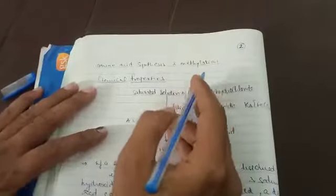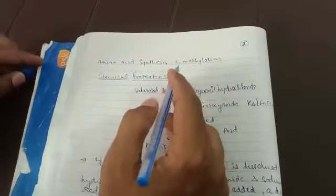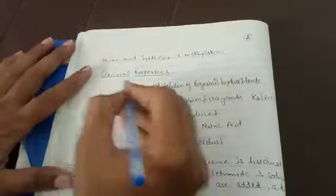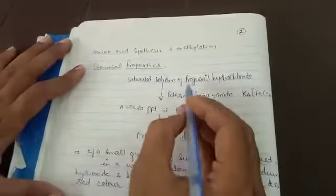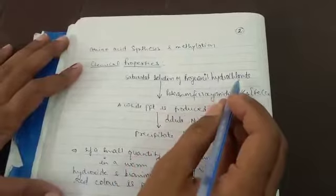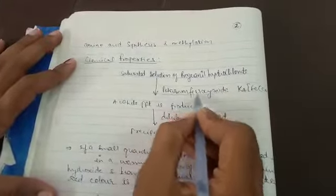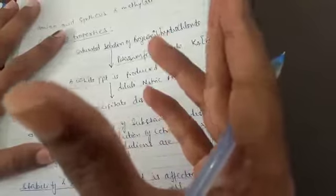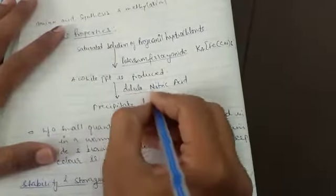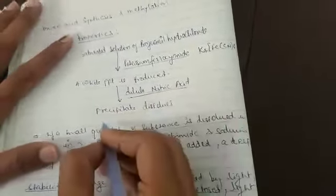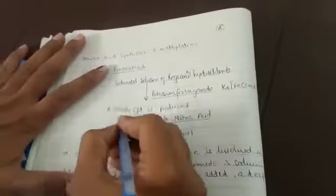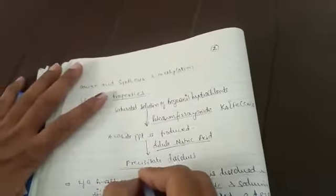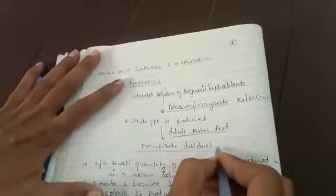Now let's look at the chemical properties. If we use a saturated solution of proguanil hydrochloride and add potassium ferrocyanide, the formula is K4FeCN6.3H2O, we get a white color precipitate which is soluble in dilute nitric acid. If we add precipitate to dilute nitric acid, this precipitate will dissolve and we will get a clear solution.